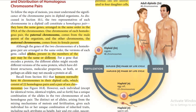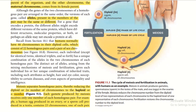Although genes of the two chromosomes of a homologous pair are arranged in the same order — that's why they are known as homologous — the version of each gene, called an allele, present in members of the pair may be the same or different. Alleles are what cause or produce variation. Humans normally have 46 chromosomes in their diploid cells, consisting of 22 homologous pairs and a pair of sex chromosomes.